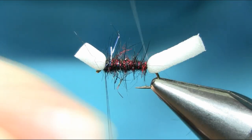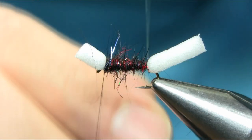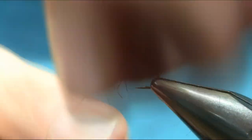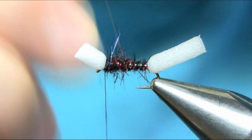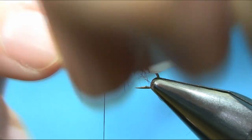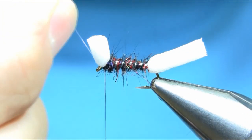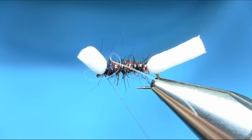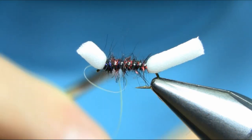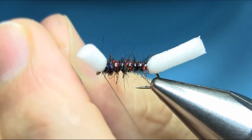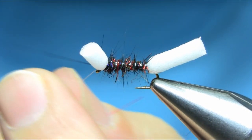That's fine. Now all you have to do is bring these ribs and then catch it in the front. A couple of turns, secure that.